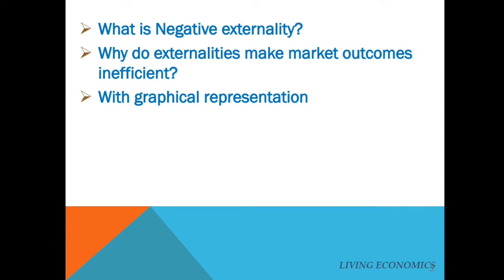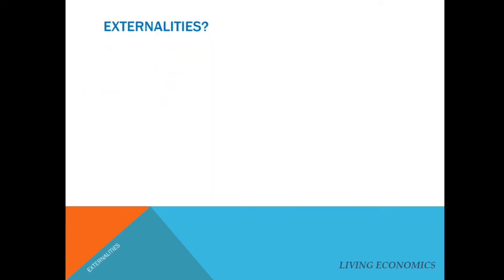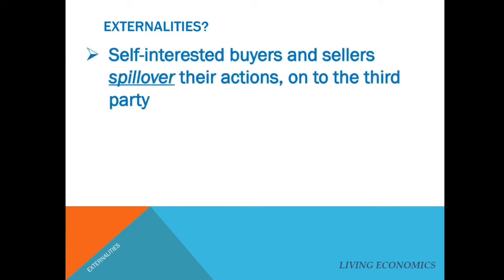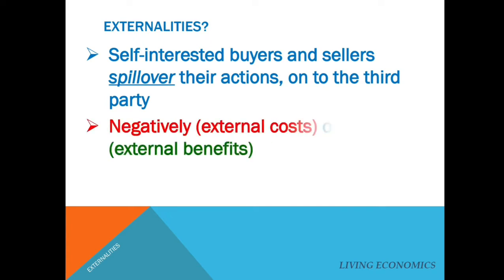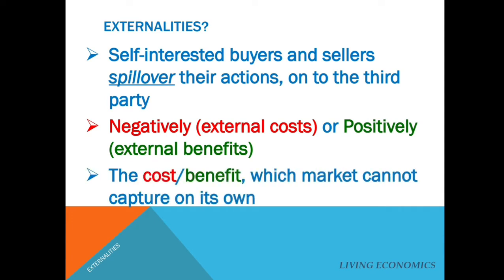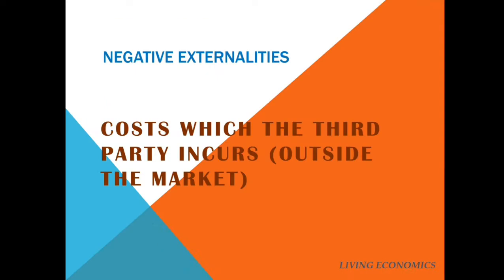What are externalities? To be precise, externalities are when self-interested buyers and sellers spill over their actions onto a third party — positively or negatively. When this happens, it is difficult for the market to capture these external costs and benefits, and so it projects an outcome which is inefficient.